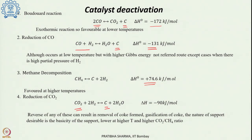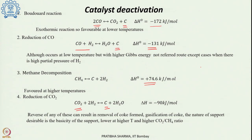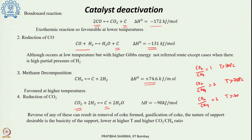Carbon formation depends on temperature and the CO2/CH4 ratio. If the CO2/CH4 ratio is stoichiometric (1:1), carbon formation is lower at temperatures above 1100°C. If the ratio is 2, temperatures above 750°C give reduced coke formation. If the ratio is 3, temperatures above 700°C result in lower coke formation. Both temperature and CO2/CH4 ratio are important in determining how much carbon is formed.